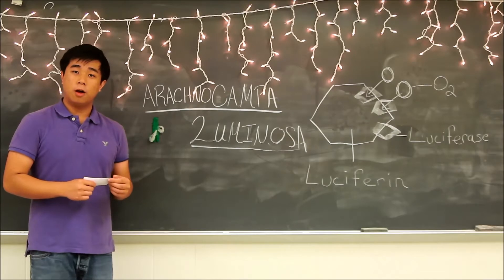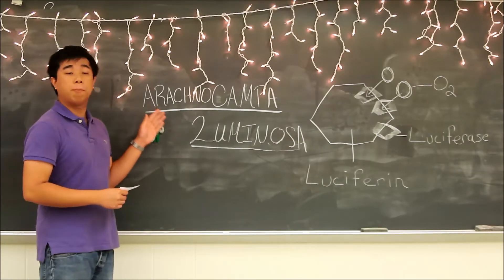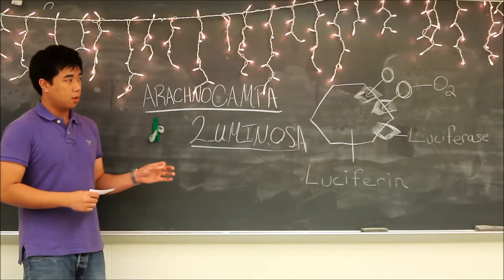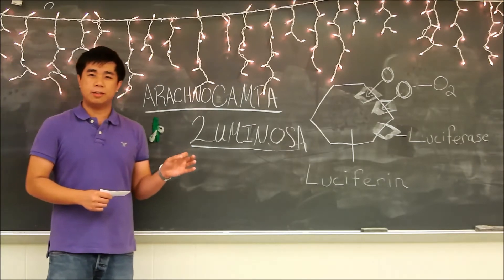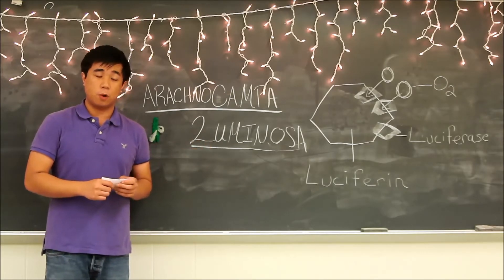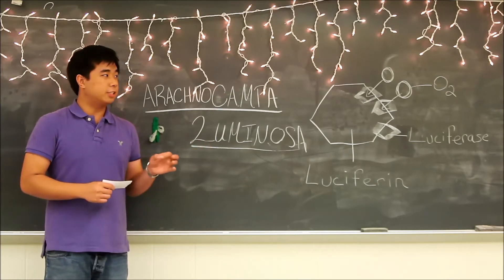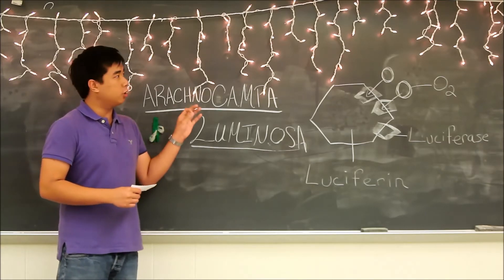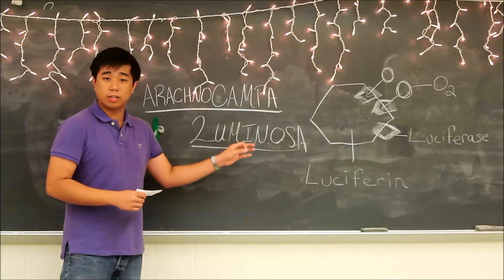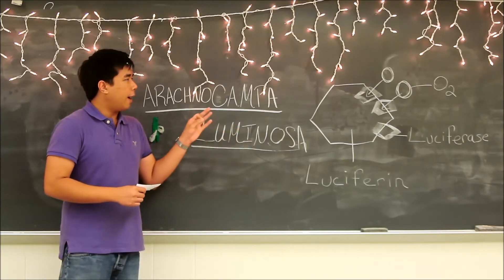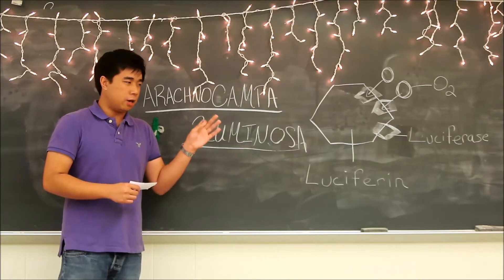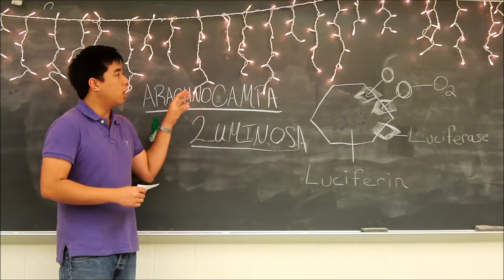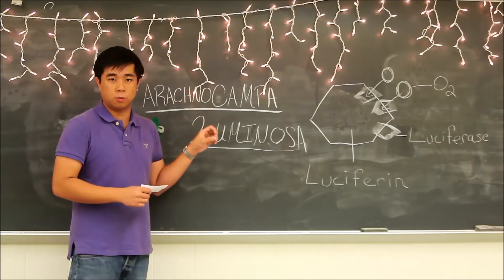The New Zealand glowworm, Arachnocampa luminosa, spends most of its life cycle in the larval stage. Why is it that they spend so much time in this stage? Well, for one, this is the stage where they have strong, forceful mouths, and they need all the energy they can get before the adult stage, where they lose their mouths and only have about a day and a half to live. So in this larval stage, they need to acquire food stores large enough to supply that mating ritual.